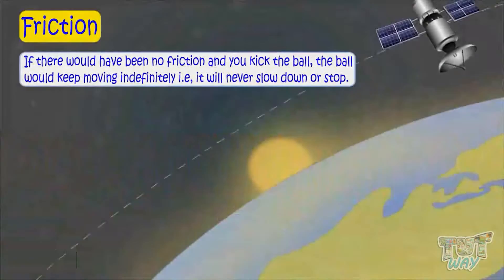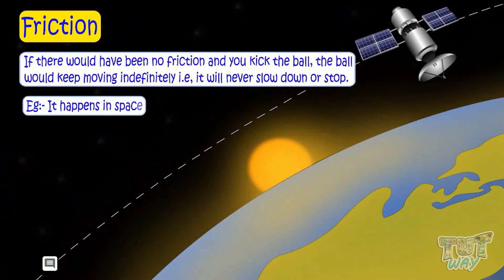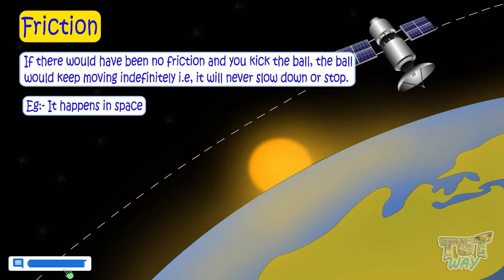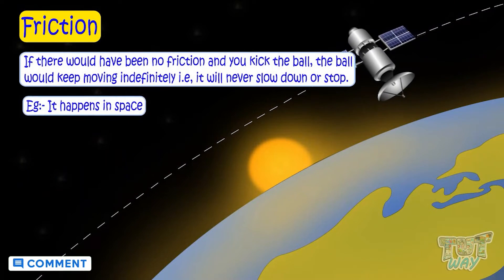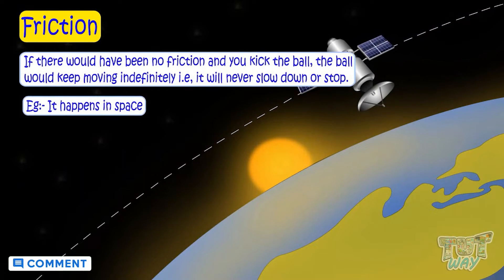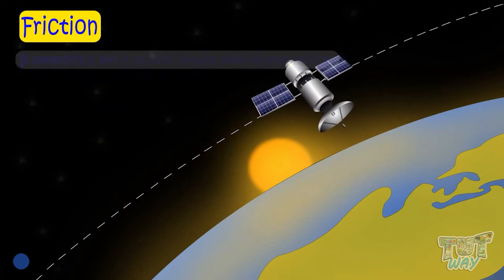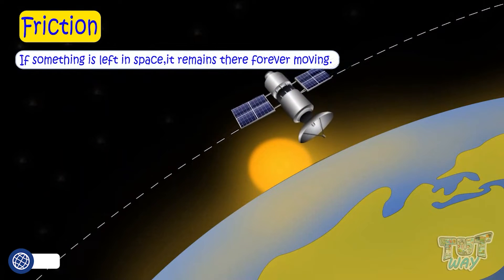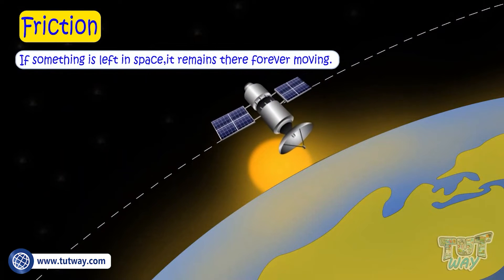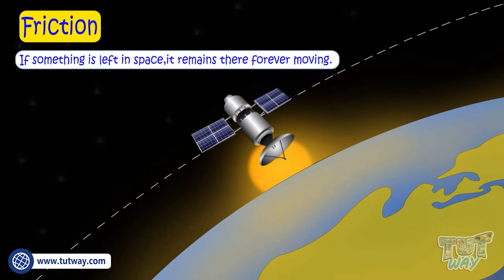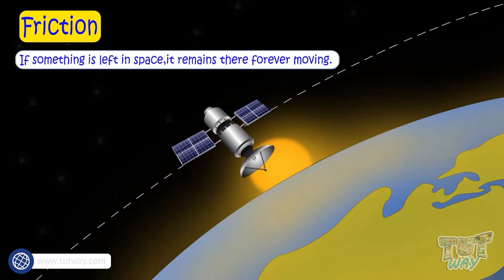It happens in space. There is no friction and gravity in space, and this is why if something is left in space, it remains there forever moving.